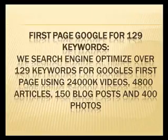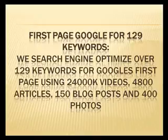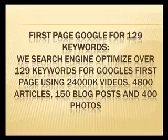We also include the first page of Google for 129 keywords. We search engine optimize over 129 keywords for Google's first page using 24,000 videos, 4,800 articles, 150 blog posts, and 400 photos.